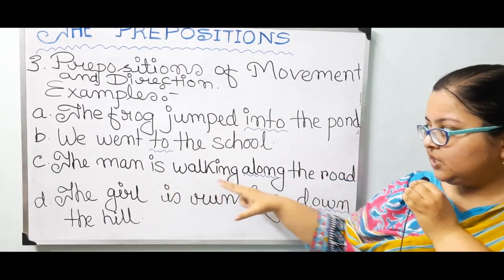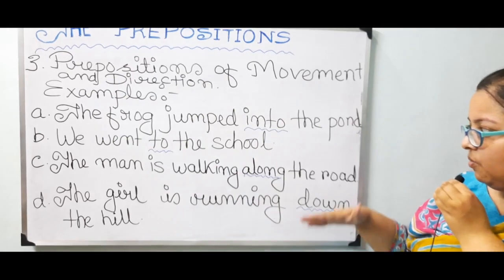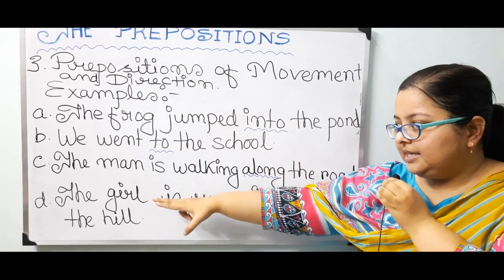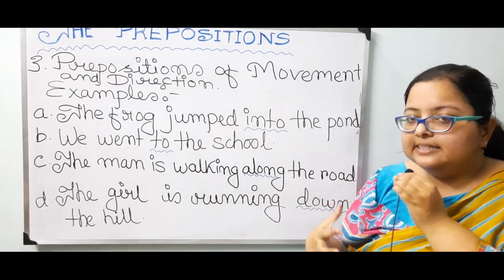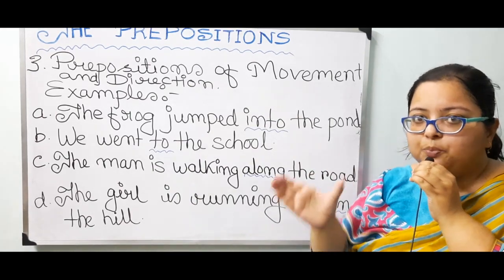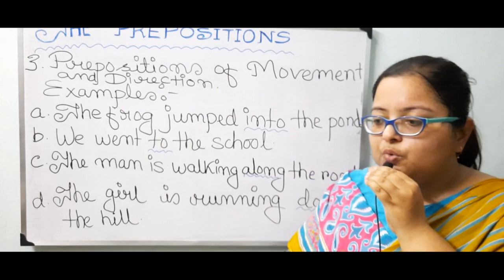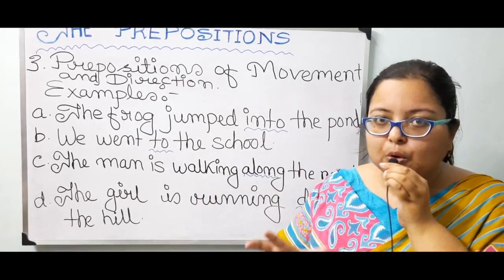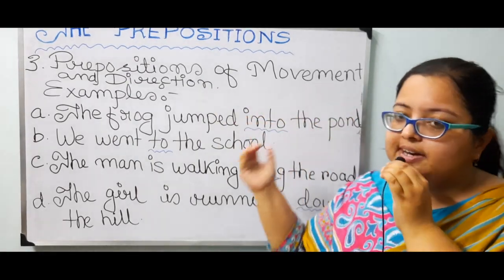Example c: 'The man is walking along the road.' 'Along' shows where the man is walking — along the road. Example d: 'The girl is running down the hill.' Where is the girl running? She is running down the hill — not upwards but downwards. There are some other words like 'from,' 'towards,' 'off,' 'out of,' and many more that you have to go through in detail in your book to know prepositions of movement and direction more.